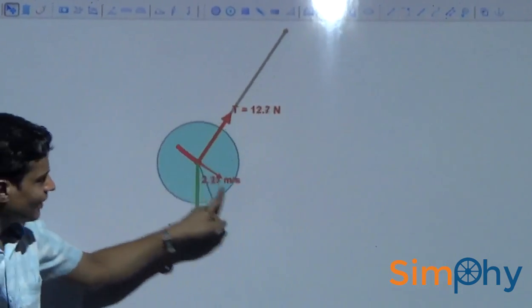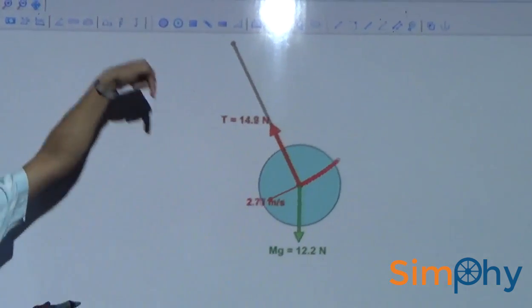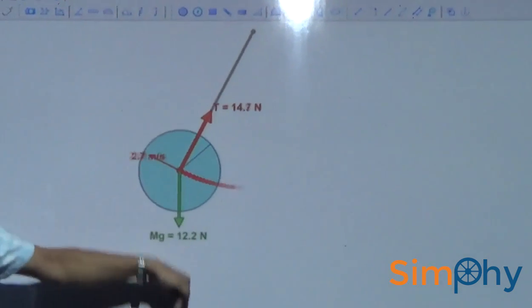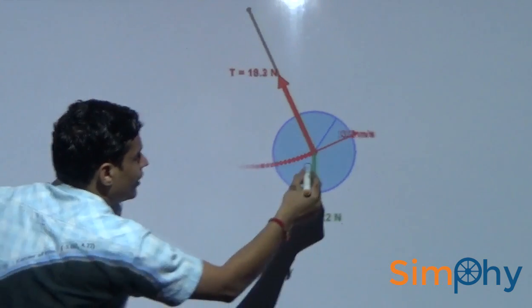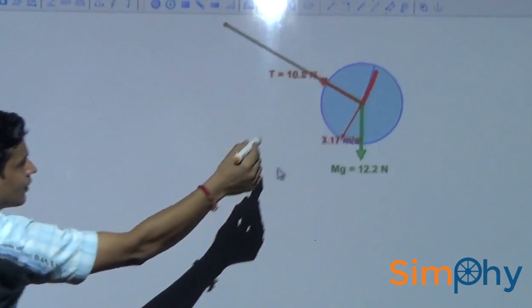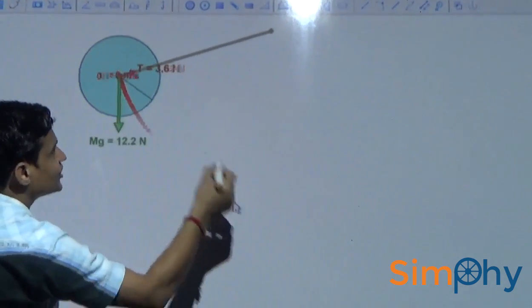The tension is maximum at bottom. Because tension is equal to mg plus mv square upon r, that is centripetal force. And at bottom centripetal force is maximum. Now greater the speed, greater will be the centripetal force and greater will be the tension at bottom.